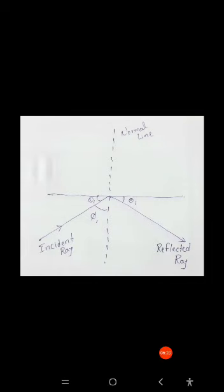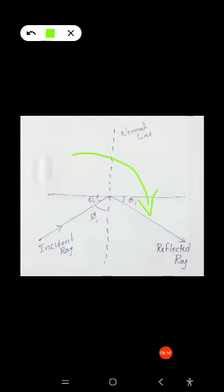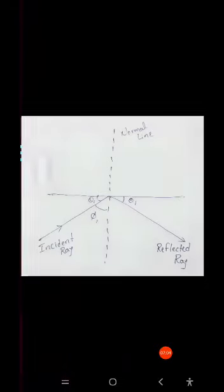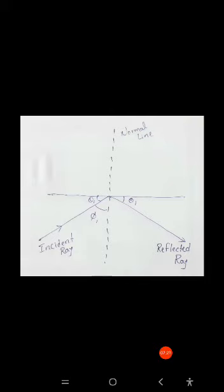If I increase the angle of incidence again, greater than the critical angle, then the ray will be reflected back into the same material. That is called reflection. So if I apply a ray at an angle greater than the critical angle, it will be reflected back to the same material.